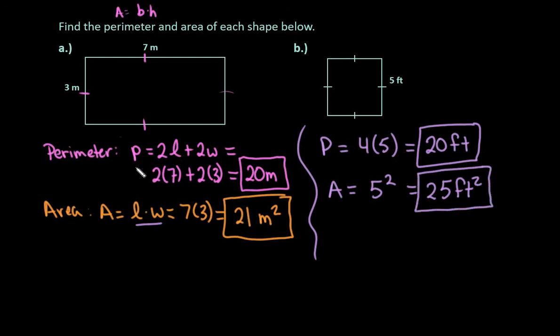So very simple process to find the area and the perimeter of both a rectangle and a square. Technically, a square is a rectangle. It's just a rectangle with four equal sides.